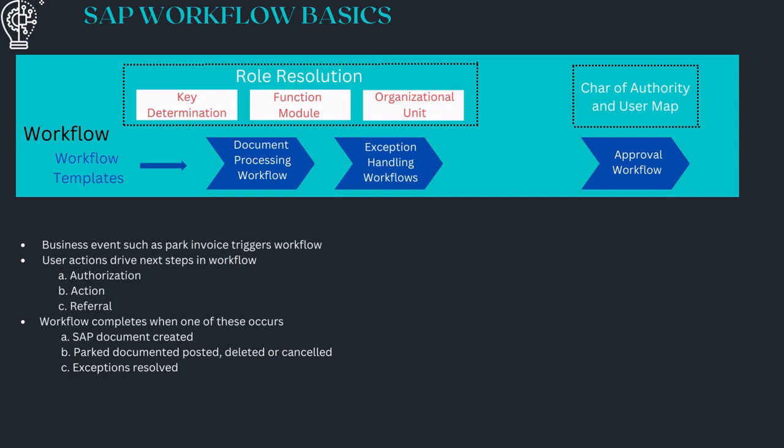The workflow gets completed only when certain activities occur — such as an SAP document being created, an exception being resolved, or a PAC document being posted, deleted, or cancelled. Now that we have understood the different steps involved in non-PO invoice processing along with the non-PO approval workflow, let's understand the WIM workplace.